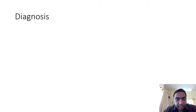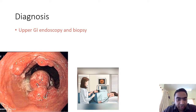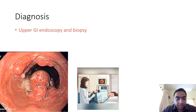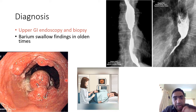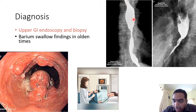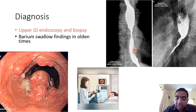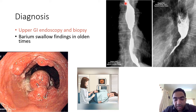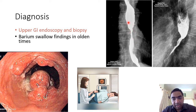Diagnosis of esophageal cancer is done first by upper GI endoscopy, where we find an esophageal lesion. In earlier days, barium swallow was the preferred method for visualization of esophageal malignancy — when barium is in the esophagus it is called barium swallow, in the stomach it is called barium meal. On barium study we can see a filling defect or shouldering of the barium as it passes through the tumor segment.